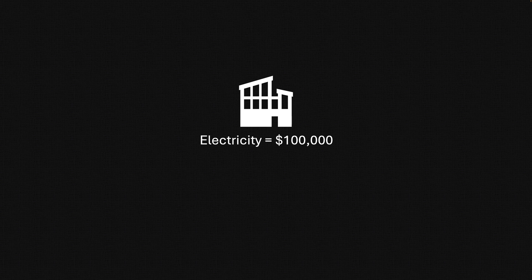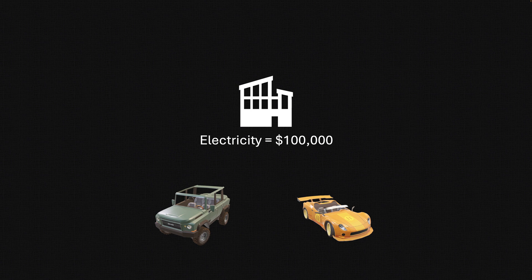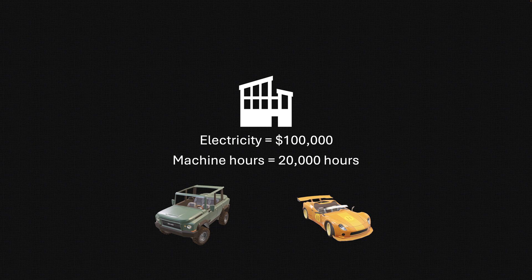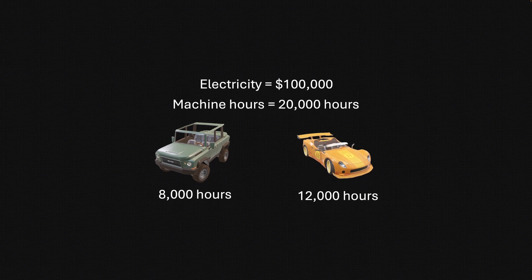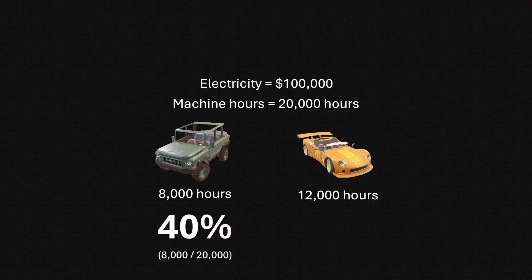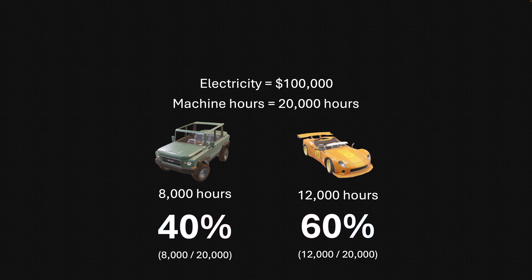Imagine we have a factory. That factory for a period has an electricity cost of $100,000. In that factory during that period, they make two products: an adventure vehicle and a sports vehicle. The business needs to allocate the cost of electricity to each product. This business keeps track of machine hours — there are 20,000 machine hours for the period. The adventure vehicle utilizes 8,000 machine hours and the sports vehicle utilizes 12,000 machine hours. The adventure vehicle is using 40% of the machine hours (8,000 ÷ 20,000), and the sports vehicle is using 60% (12,000 ÷ 20,000).